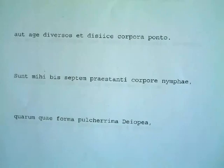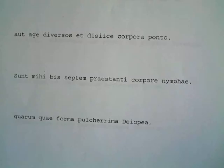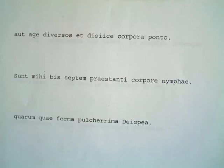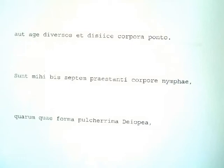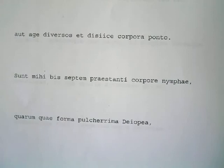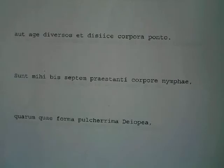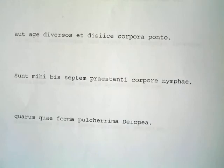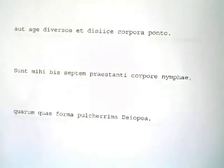Here we are in Book 1 around line 71. It's always important when you pick up where you've left off to think back on the plot and remember what's going on. It gives you some context and somewhere to start. Juno has been angry and upset about how the Trojans never get hurt. We learned about Aeolus and his cave of winds, and she has started talking to him to convince him to let the winds go and scatter the Trojans and sink their ships.